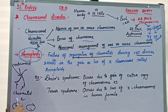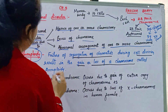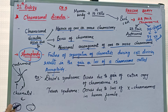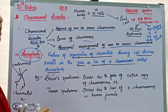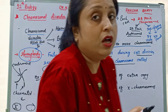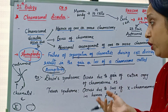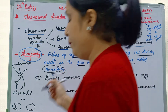Remember this important line: failure of segregation of chromatids — segregation means separation — during gamete formation. The failure of segregation of chromatids during meiosis results in gain or loss of a chromosome, which is called aneuploidy. If chromosome number increases from 46 to 47, that is a problem; if it decreases from 46 to 45, that is also a problem.